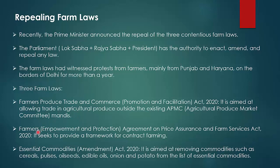The third bill — Farmers' Empowerment and Protection Agreement on Price Assurance and Farm Services Act, 2020 — sought to provide a framework for contract farming. This meant a company could contract with farmers: if you have a farm and produce certain things, we will give you money. It was a contract-based service brought to farmers.